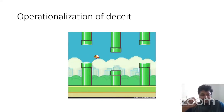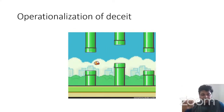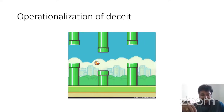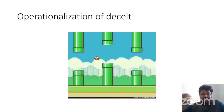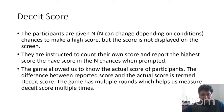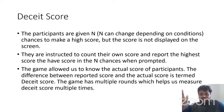The game allowed us to know participants' actual scores. The difference between reported score and actual score was termed the 'deceit score,' giving us an objective operationalization of deceit. The game has multiple rounds, allowing us to measure this score multiple times. For Experiment 1, we used the Autobiographical Memory Characteristics Questionnaire (AMCQ) to remind participants of their various misdeeds. We hypothesized that reminding participants of previous misdeeds would reduce dishonest behavior.